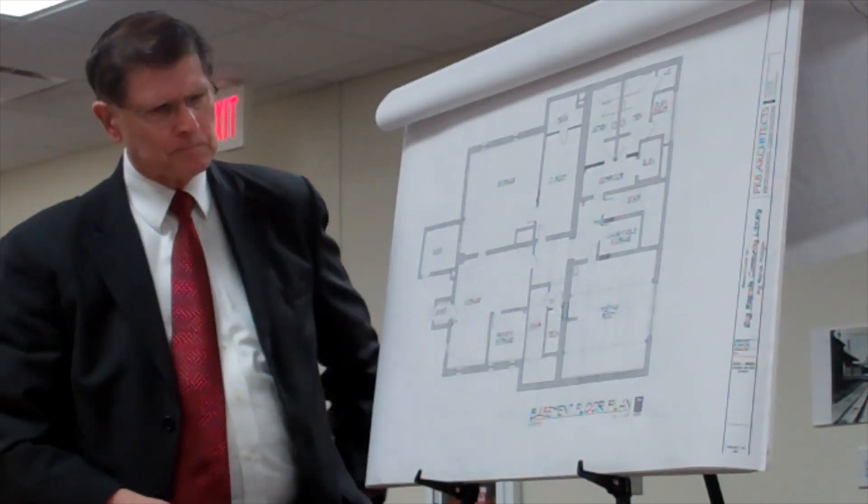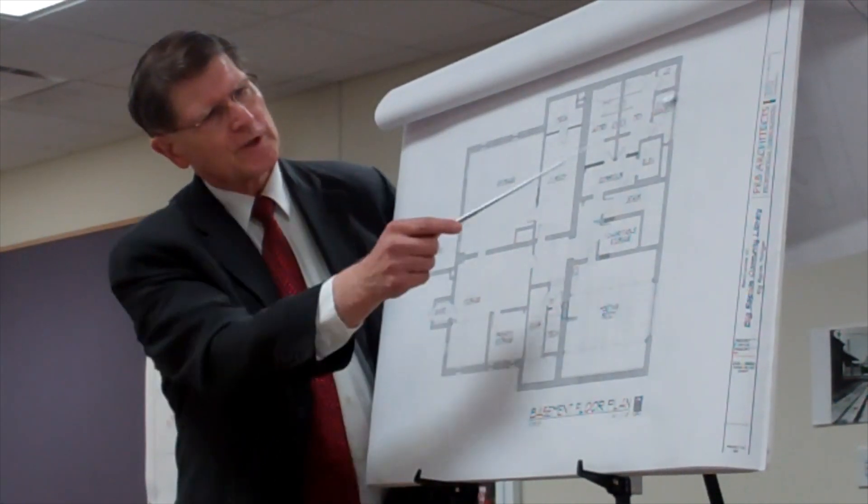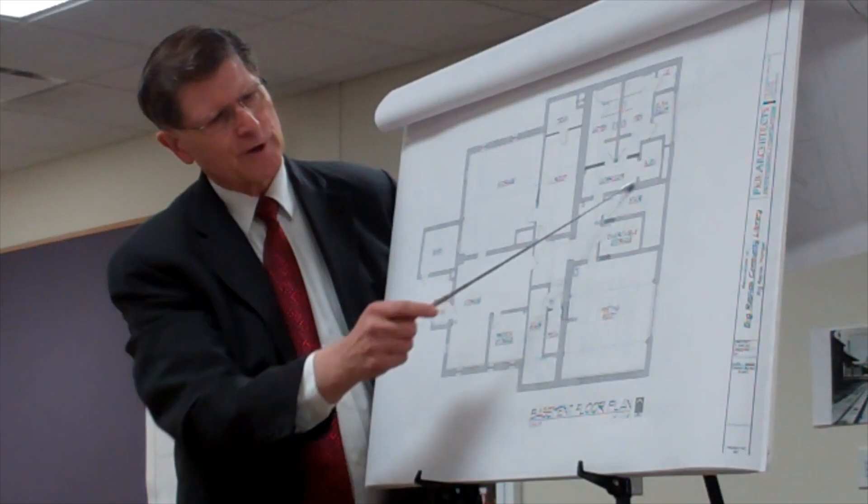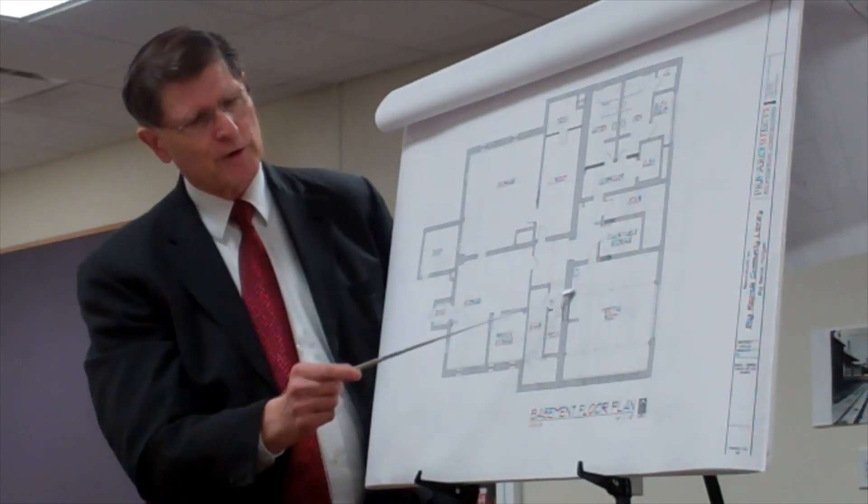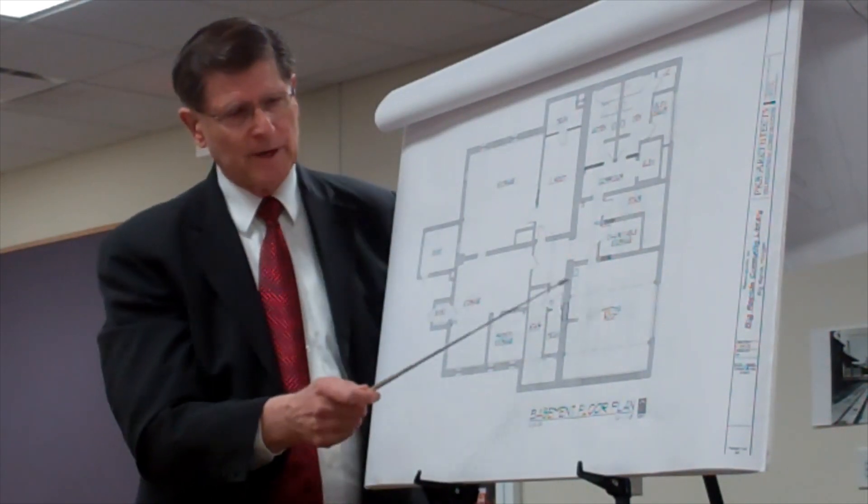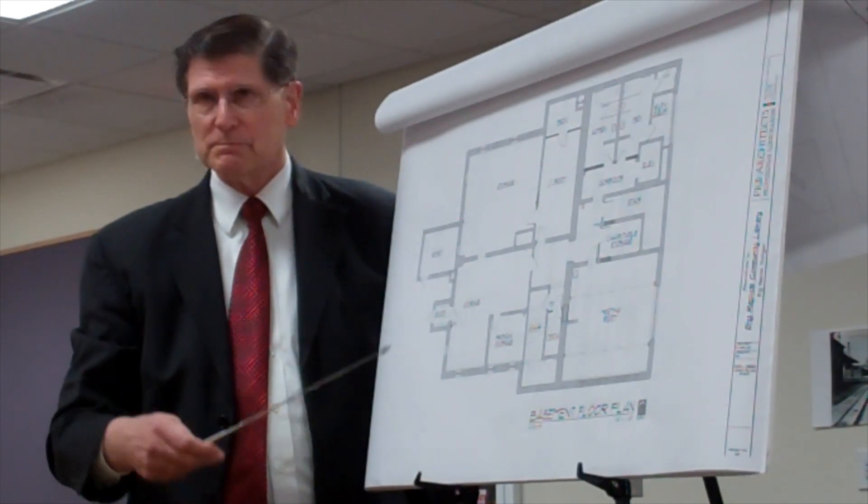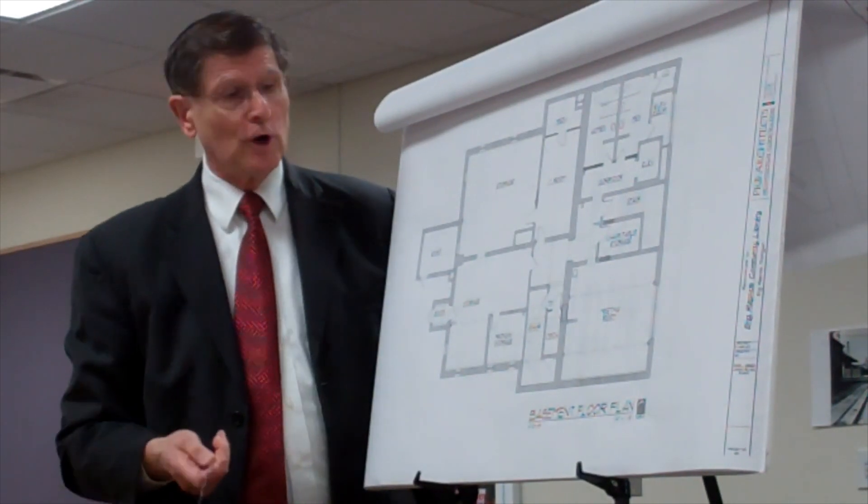Lower level - here's the existing bathroom group and the stairs coming down. We've taken this room here, which is currently being used for storage, and we've turned it into a meeting room. So that'll be multi-purpose, children's story hour, evening meetings for adults.